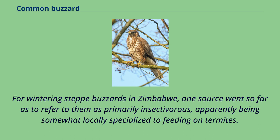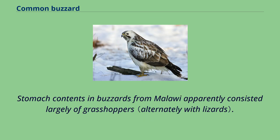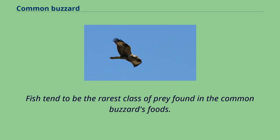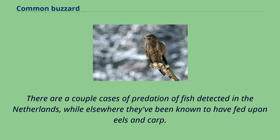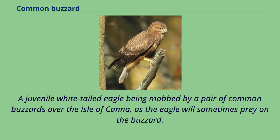Fish tend to be the rarest class of prey found in the common buzzard's foods. There are a couple of cases of predation of fish detected in the Netherlands, while elsewhere they have been known to have fed upon eels and carp. Common buzzards co-occur with dozens of other raptorial birds through their breeding, resident and wintering grounds, and there may be many other birds that broadly overlap in prey selection to some extent.